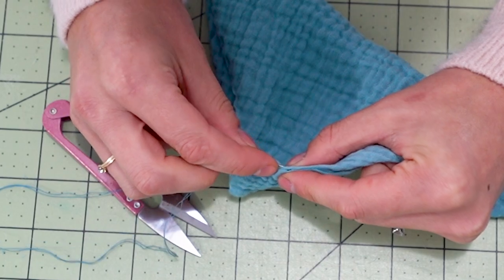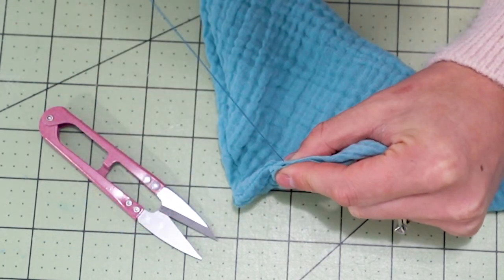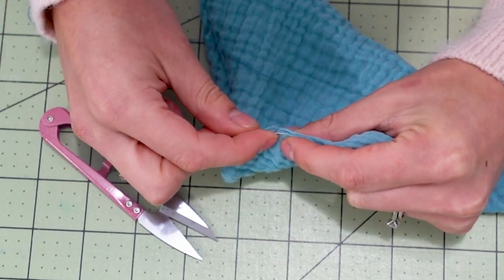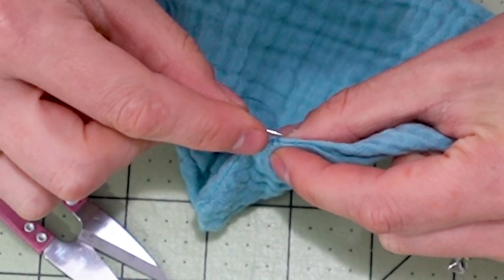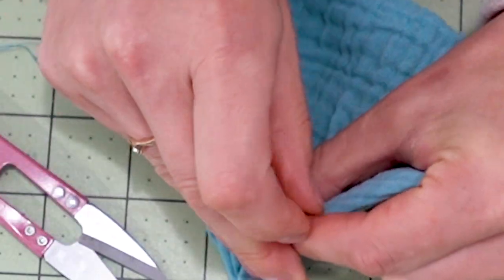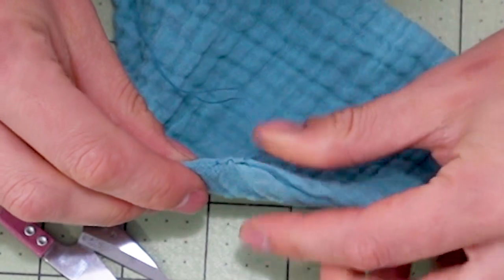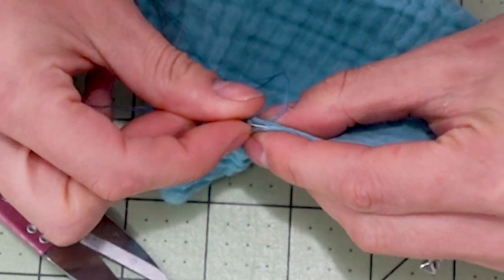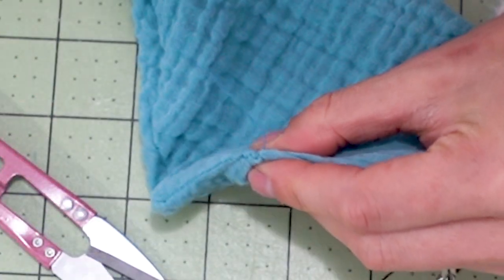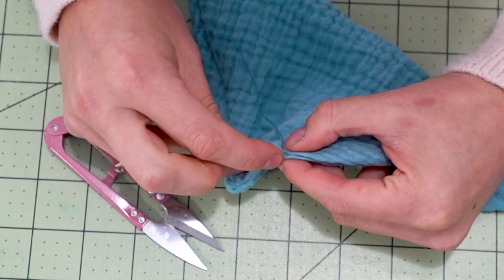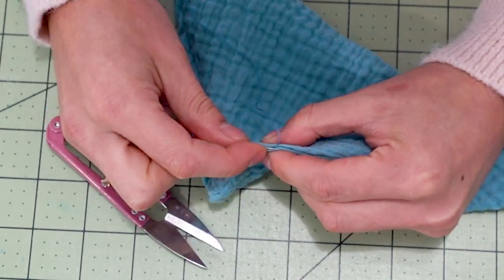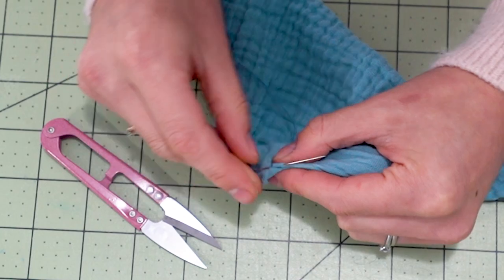Then we're going to do a ladder stitch. If you want a full tutorial on the ladder stitch I will link a video that I did down below on how to do that ladder stitch. But really you're just taking one end of one side putting a little bit through the needle and then going over to the next side just like a ladder and continuing all the way down that two inch opening.